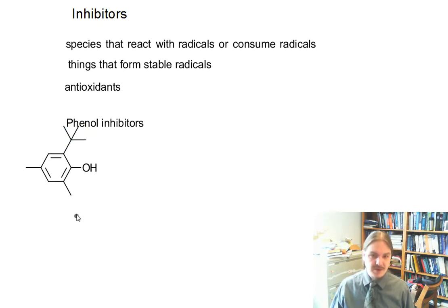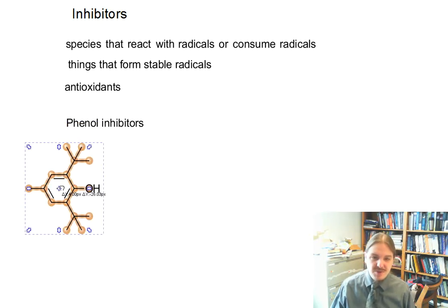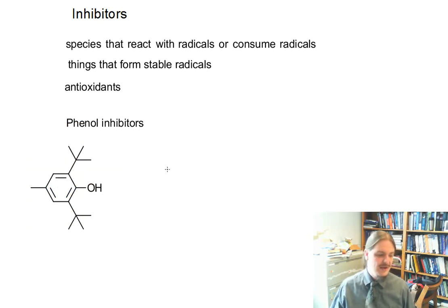And amongst those are the prototypical compounds of BHT, butylated hydroxy toluene, and BHA, butylated hydroxy anisole, which are phenols. So benzene ring alcohol with some alcohol groups around them, and the most important parts of this are the tert-butyl groups and the OH.